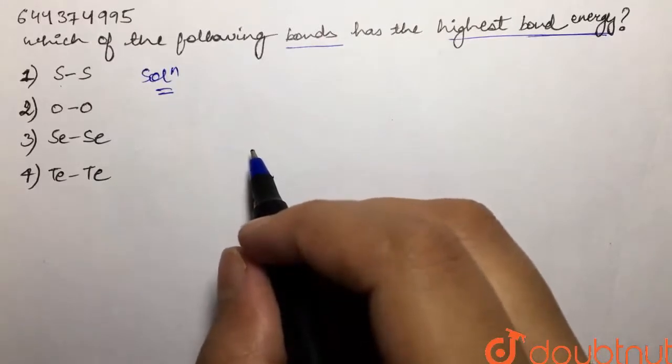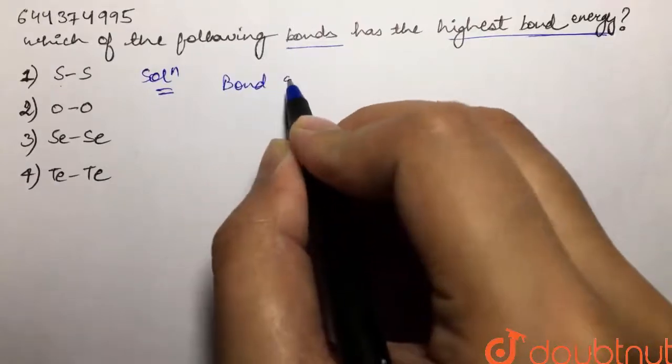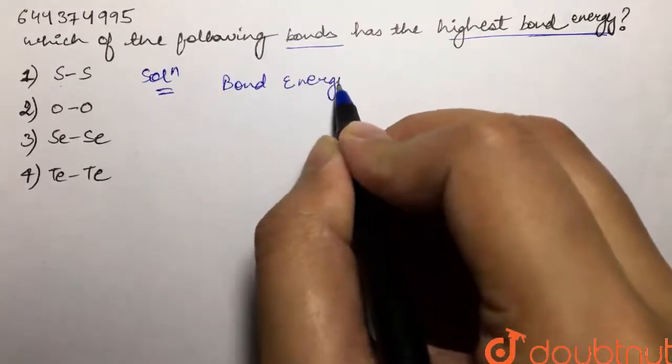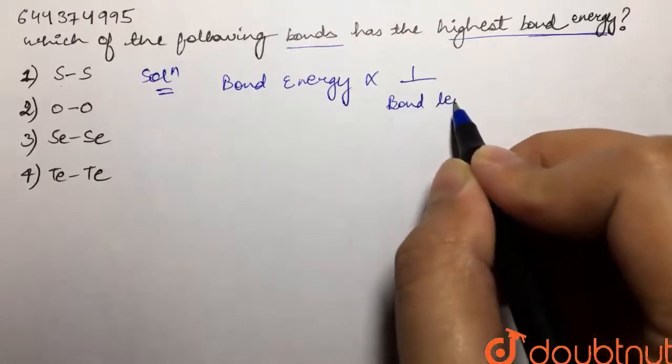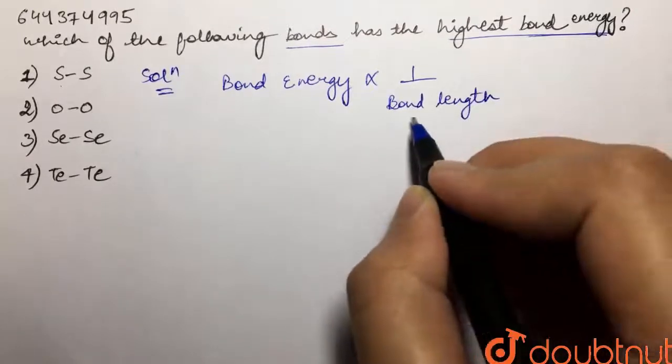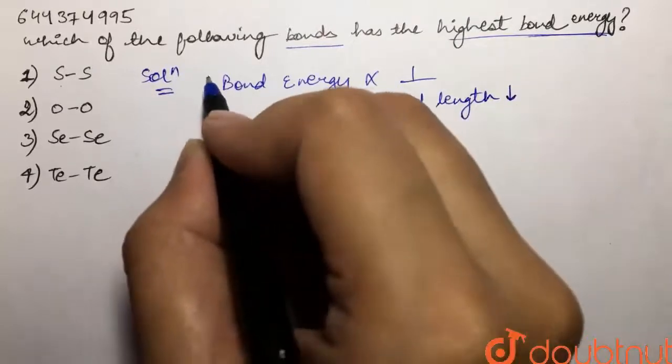bond has the highest bond energy. Now we know that bond energy is inversely proportional to bond length. The lesser the bond length, or the smaller the bond length, the greater the bond